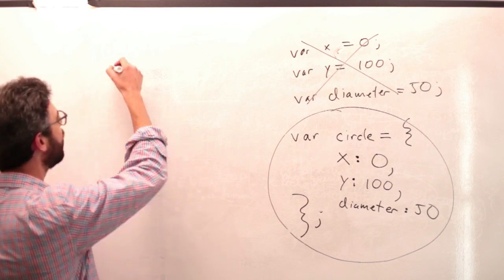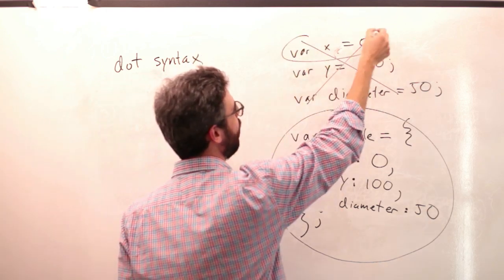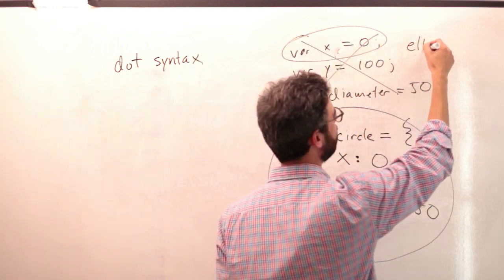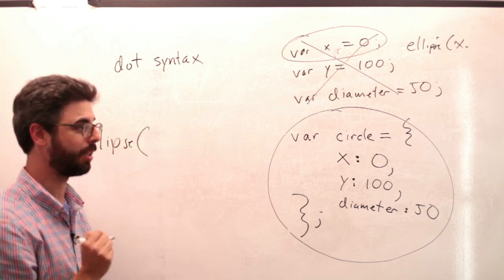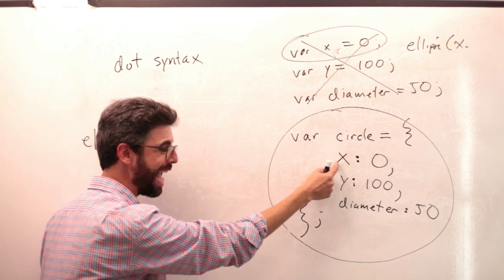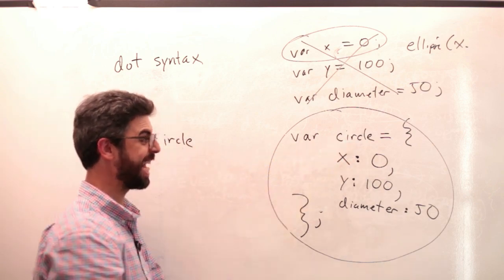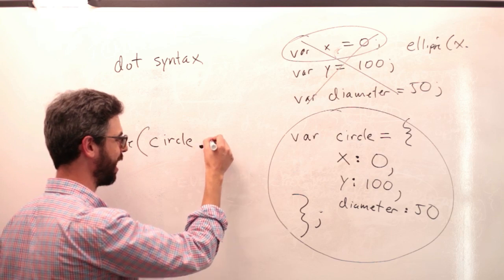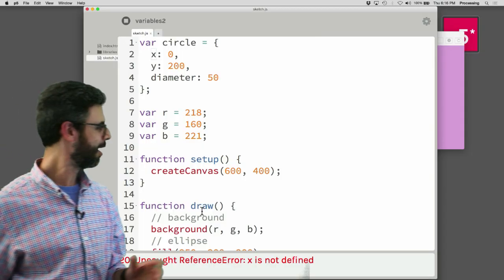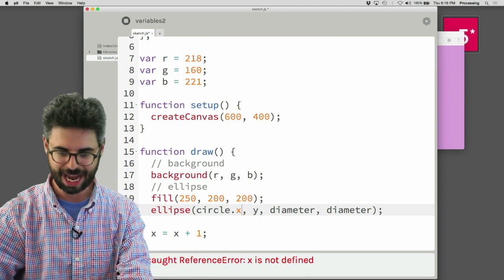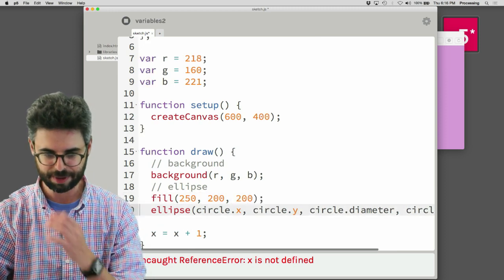And the way that you do that is with something known as dot syntax. Right? When I just had this variable, variable X, I just said ellipse at X. So now, what do I want to do? I want to draw the ellipse at the circle's X. The X inside circle. And the way that I get there is I refer to the variable name circle, and I get to that X value inside with a dot. Dot X. Circle dot X. OK. Let's go back now, over here, and I'm going to say circle dot X, circle dot Y, circle dot diameter, and circle dot diameter.